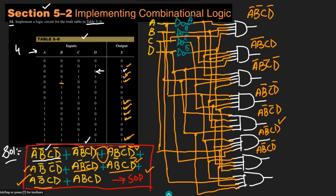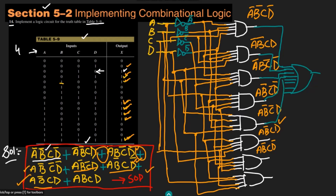This is basically the implementation of all the product terms. Now at the end, what I have to do is add them all together using an OR gate. The OR gate has 8 inputs — 1, 2, 3, 4, 5, 6, 7, 8 — one from each AND gate output. The output of this OR gate is X, which is the complete SOP expression. This is the solution for the question, in which we have seen the implementation of all the gates.